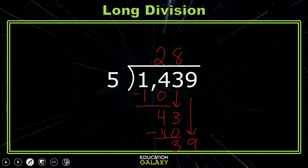We know 5 goes into 39 seven times, but that's only 35, so that means there are 4 left over. So 4 is our remainder. That makes our answer 287 with a remainder of 4.